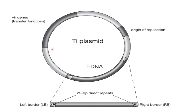The Ti plasmid of Agrobacterium shows the origin of replication, the region encoding virulence genes represented as vir genes, and transfer DNA represented as T-DNA. The T-DNA is flanked by 25 base pair direct repeats known as left and right borders. The vir genes are required for T-DNA processing and transfer to the plant cell.